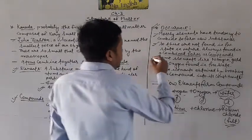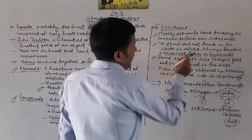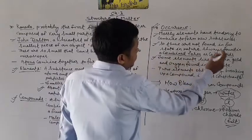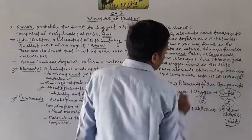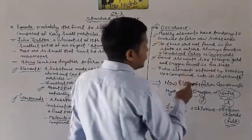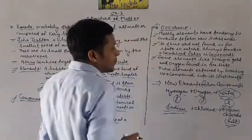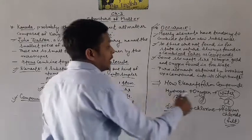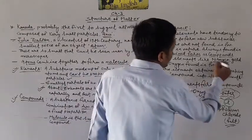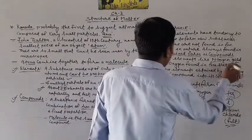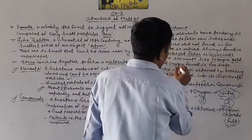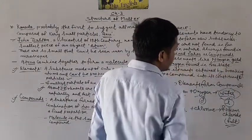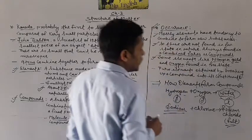Next, some elements jo ki free state mein paye jaate hain — like nitrogen, gold, oxygen.